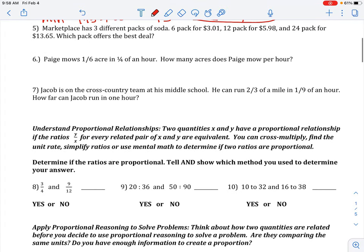Number 5, Marketplace has 3 different packs of soda that you're comparing the unit rates for. For pack 1, you are doing 3.01 divided by 6, and you get 0.502. I'm not rounding that yet, because when you divide 5.98 divided by 12, you get 0.498.